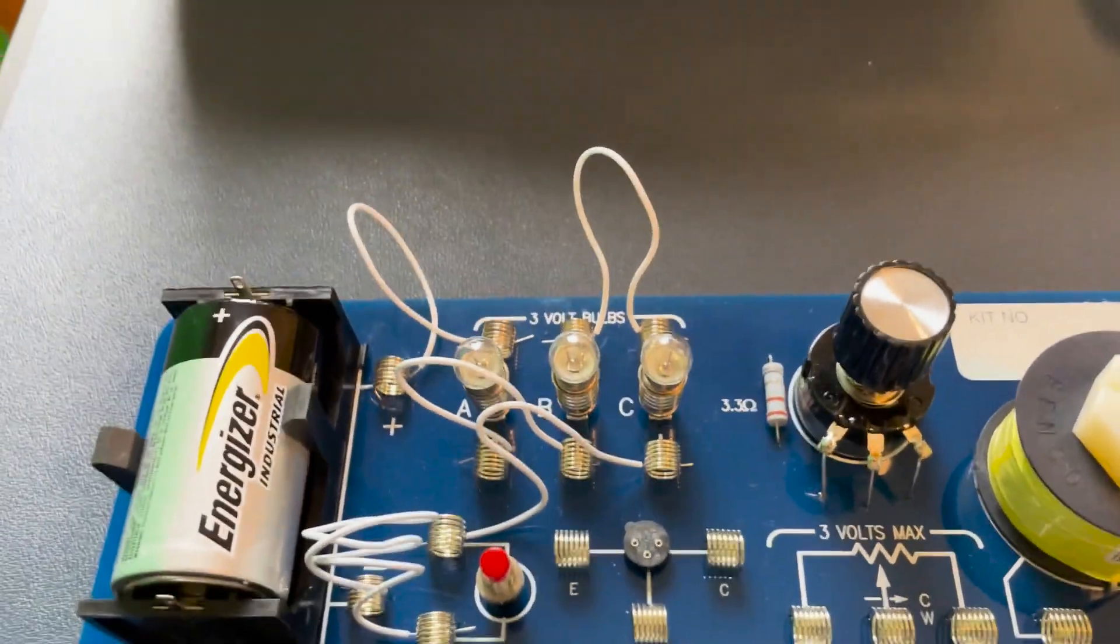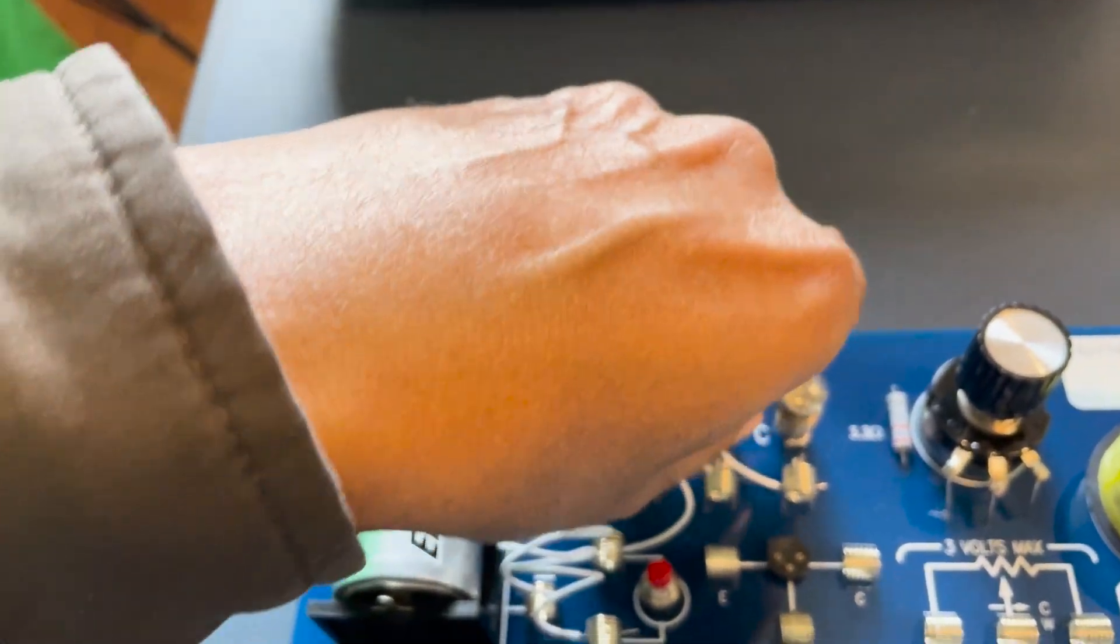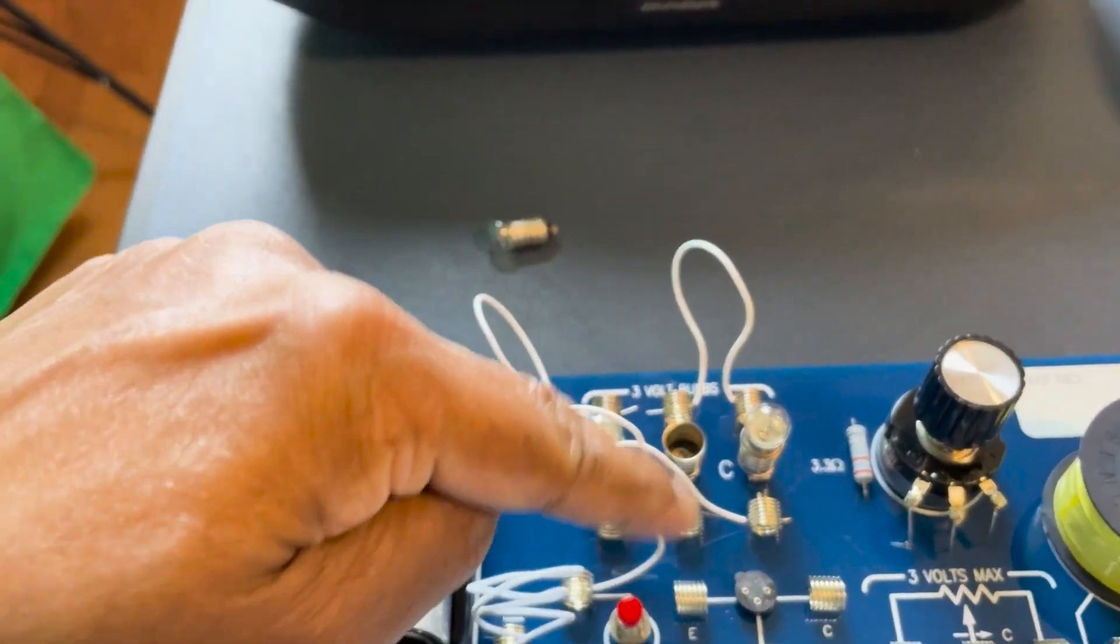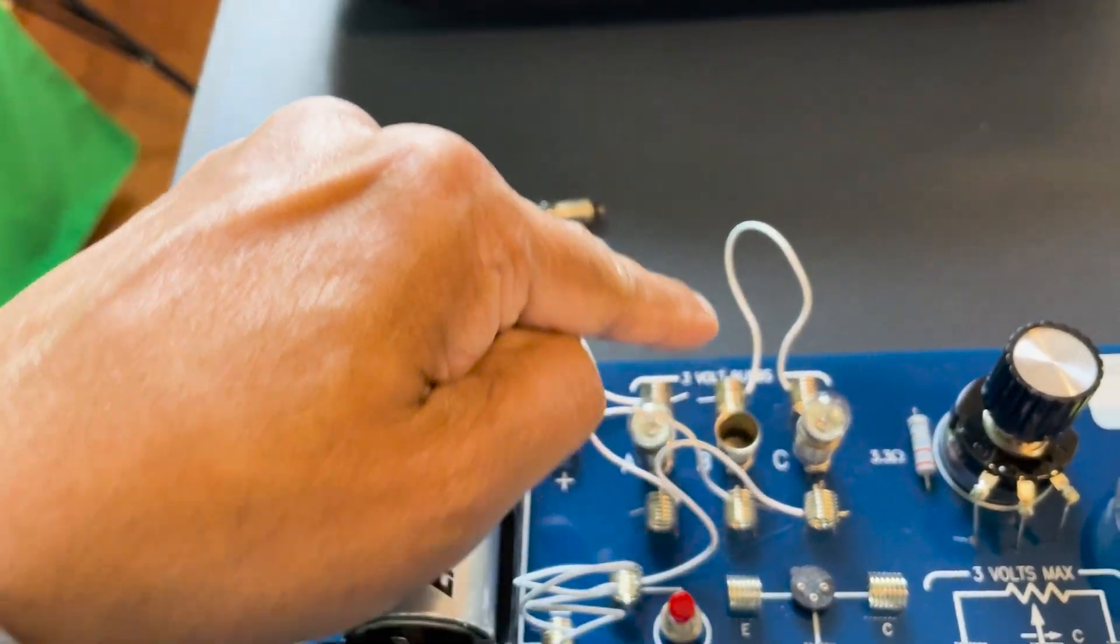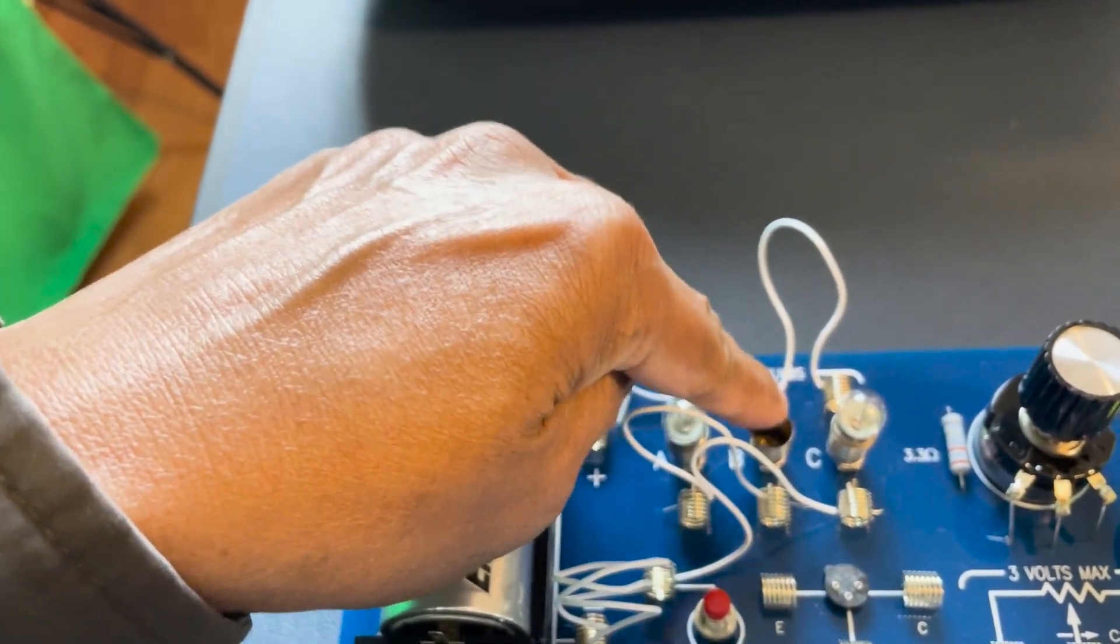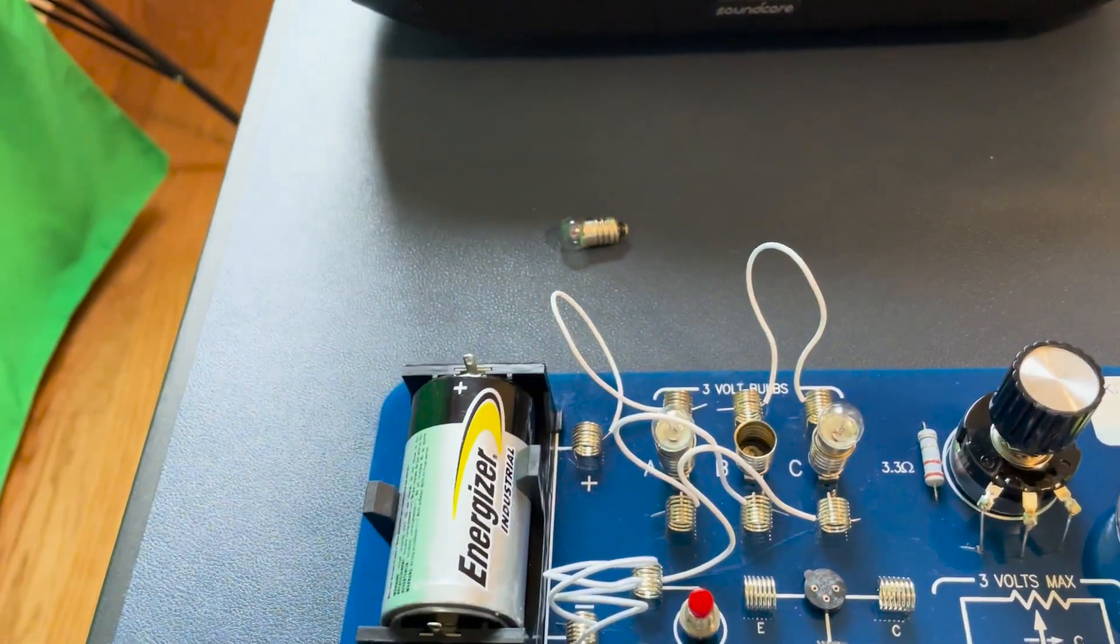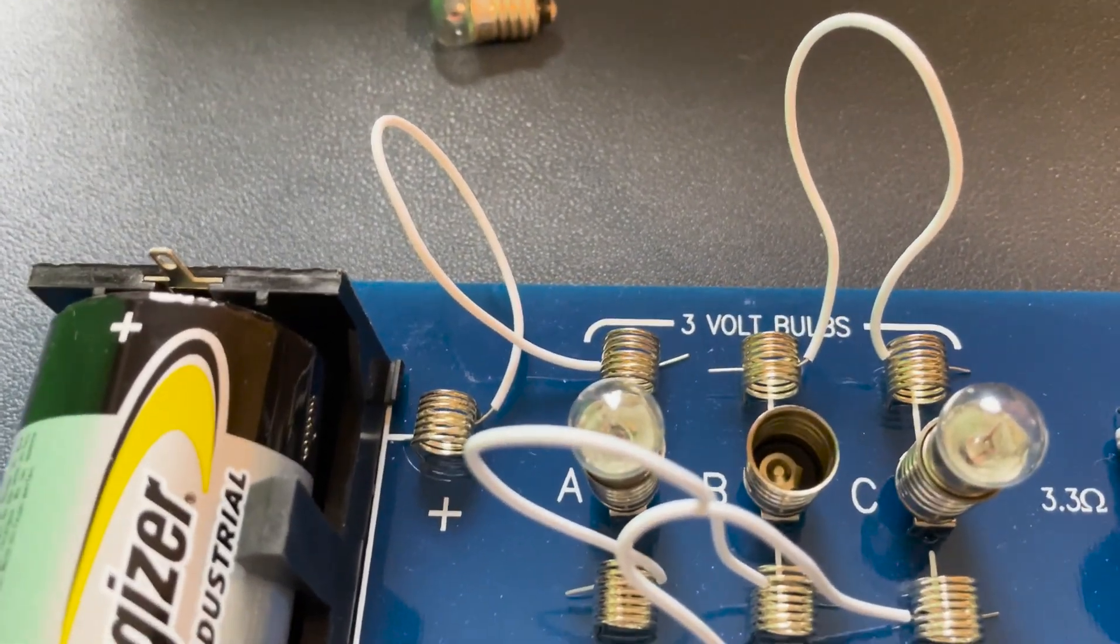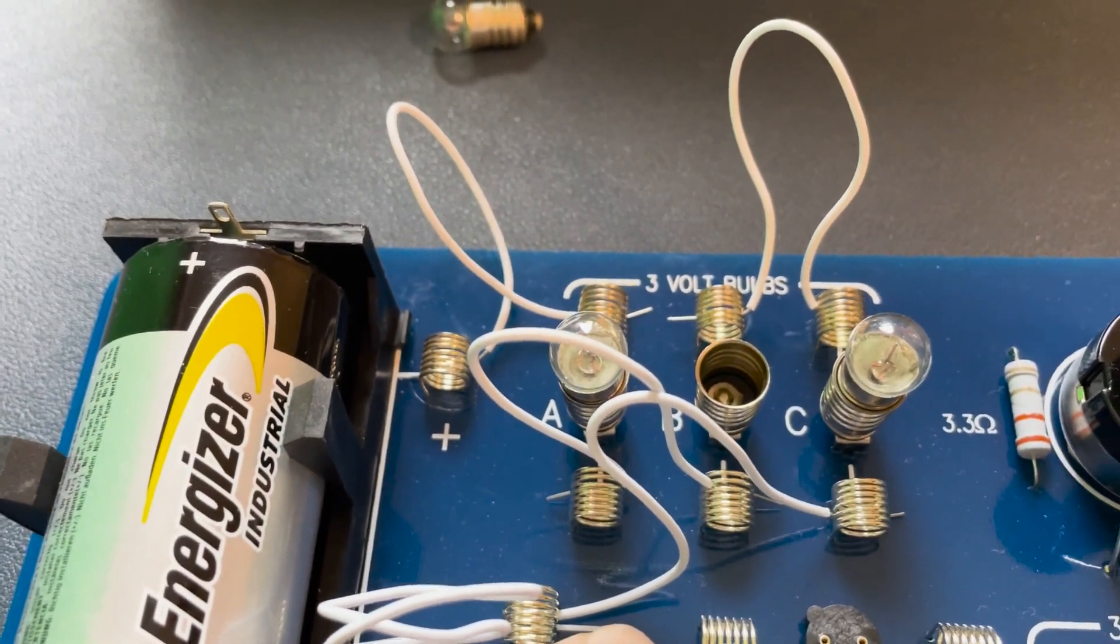Now, the question is, what would happen if one of the light bulbs in the center was removed? It's very simple to understand that because these light bulbs were connected in series and the circuit was flowing from one to the other to the third one, this acts as an open circuit now. There is no current that can flow through any of these light bulbs because the circuit is broken. Even when I press on the switch, look what happens. None of them light up because they were connected in series.